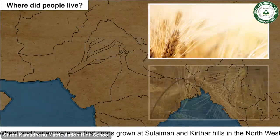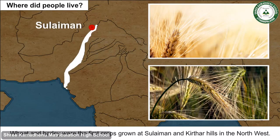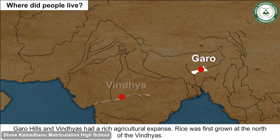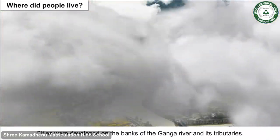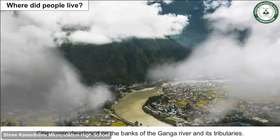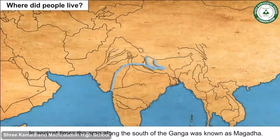Wheat and barley were the first crops grown at Suleiman and Keerthar Hills in the north-west. Garo Hills and Vindhyas had a rich agricultural expanse, and rice was first grown to the north of the Vindhyas. Cities were developed on the banks of the Ganga River and its tributaries.